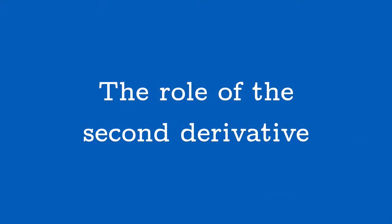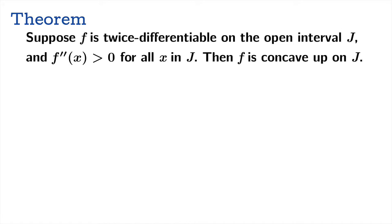How does the second derivative get invited to this party? Here's the theorem: suppose f is twice differentiable on the open interval J, and f″(x) > 0 for all x in J. Then f is concave up on J. To say a function is twice differentiable just means you can take the derivative twice — the domain of f″ is the open interval J.